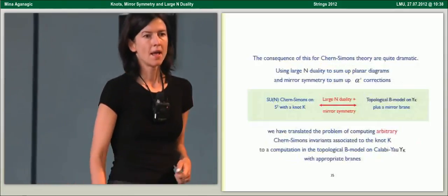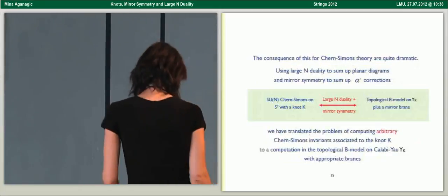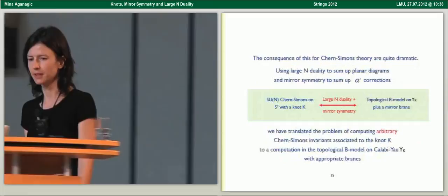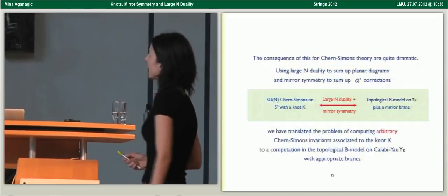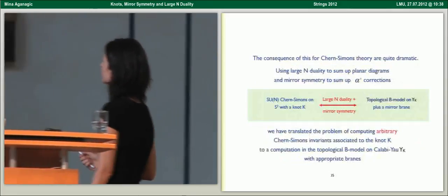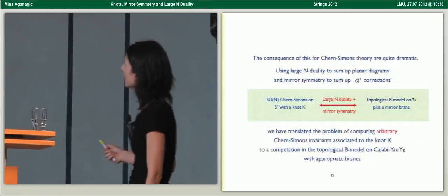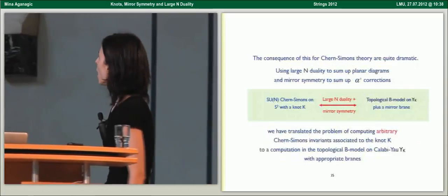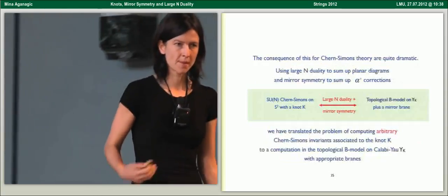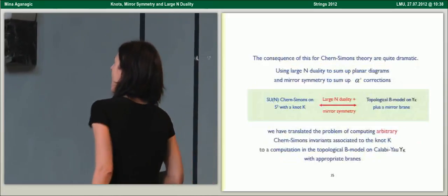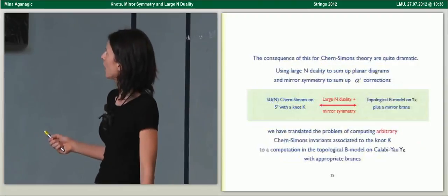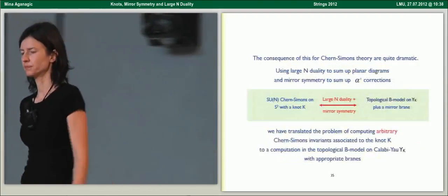What about knot theory? The consequences for knot theory are quite dramatic. So far, we used Chern-Simons theory as just a tool, but let's think about what this means for Chern-Simons theory. If you take SU(N) Chern-Simons theory on S3 with a knot, then the combination of large N duality and mirror symmetry relates this to a topological B model on the mirror Y_K plus a mirror D-brane. Using this combination of two dualities, you've translated a problem of computing arbitrary knot invariants to computation in the topological B model on the mirror with appropriate branes.